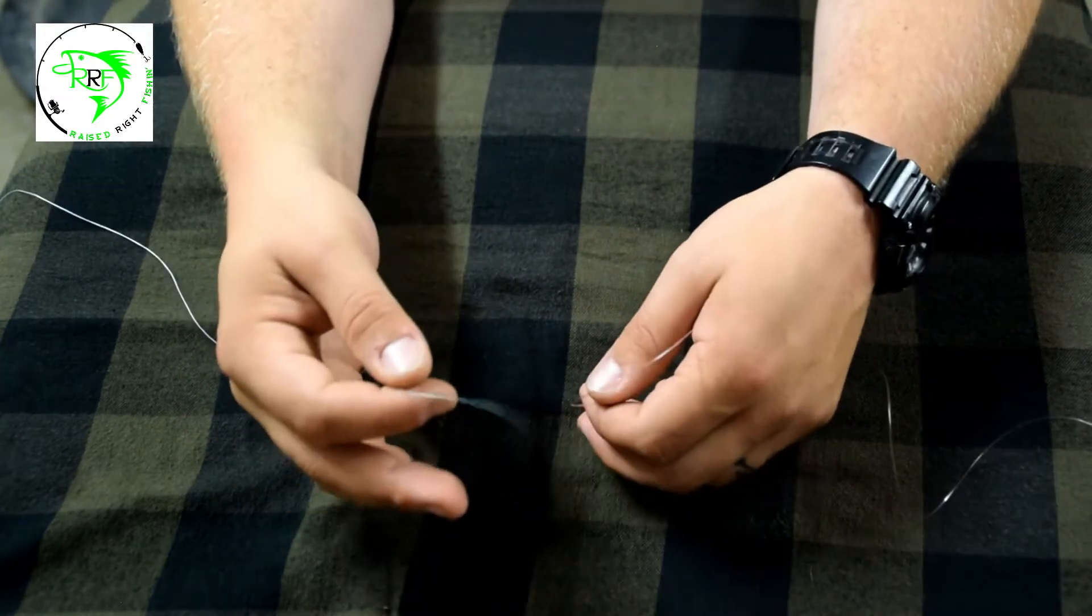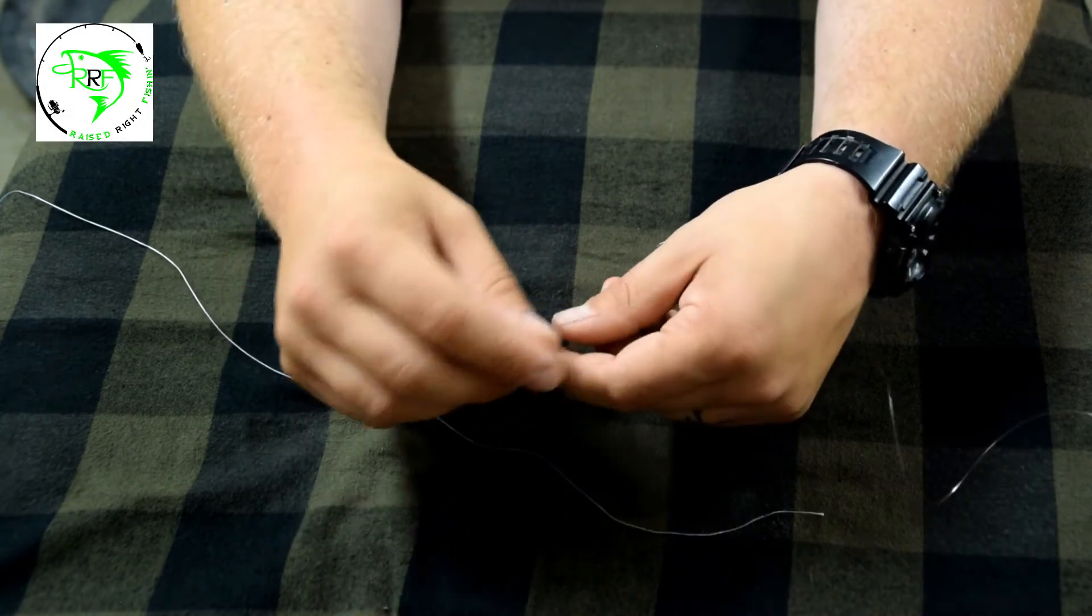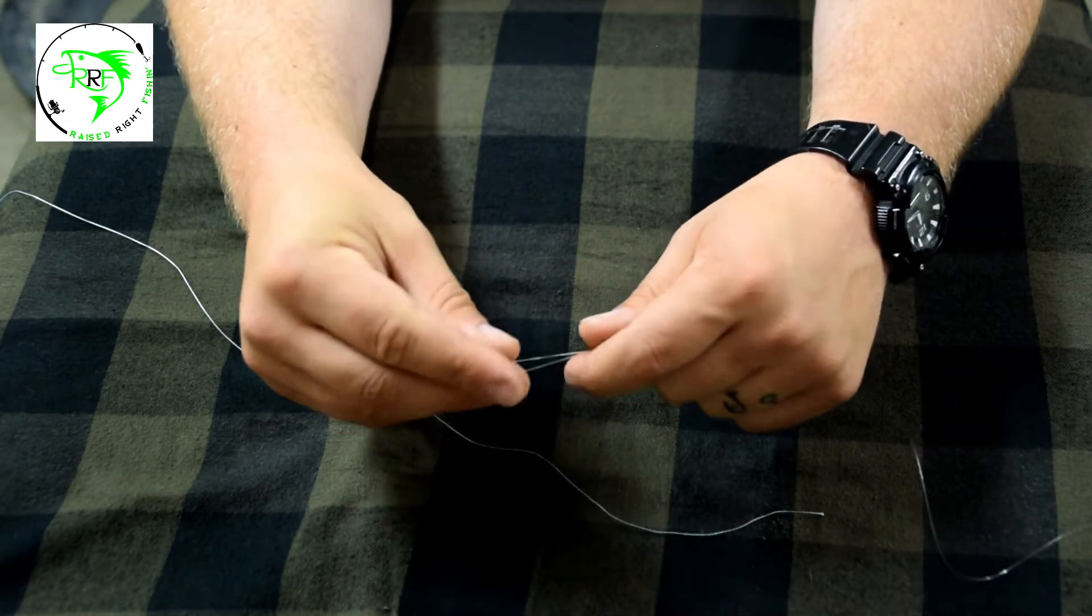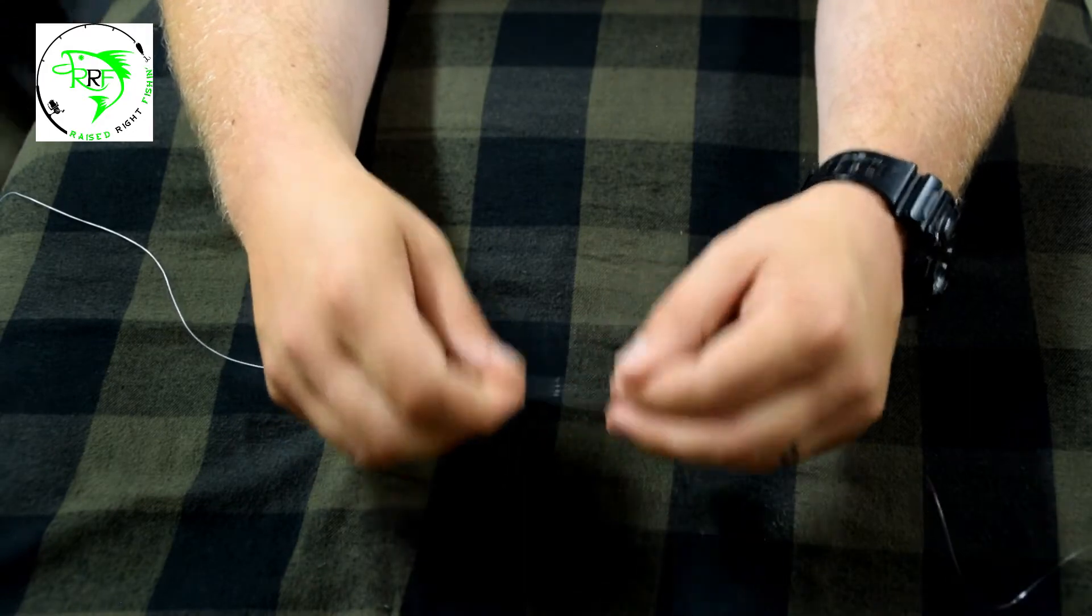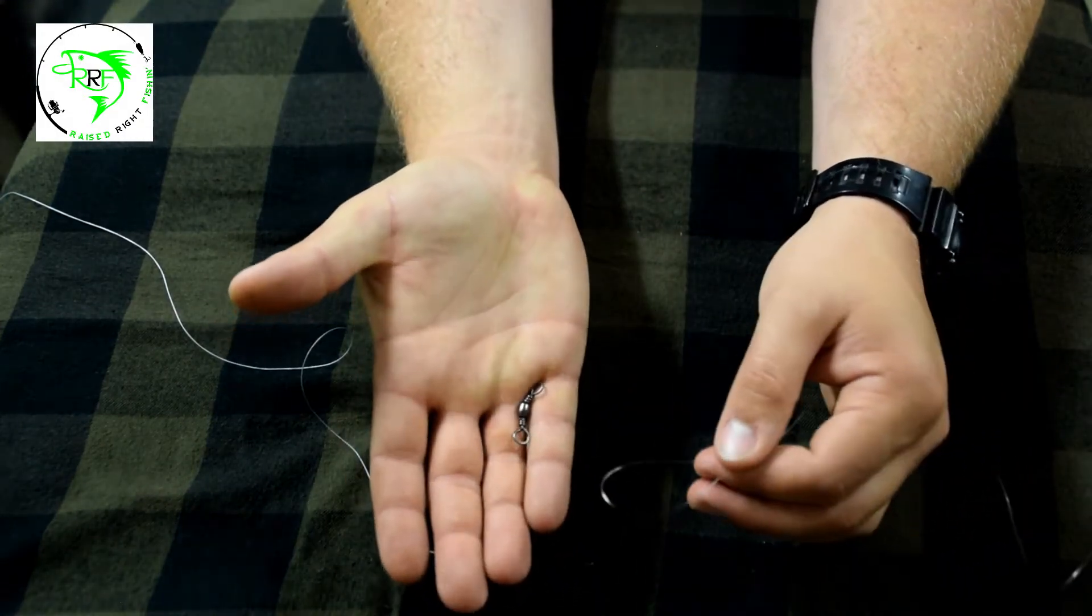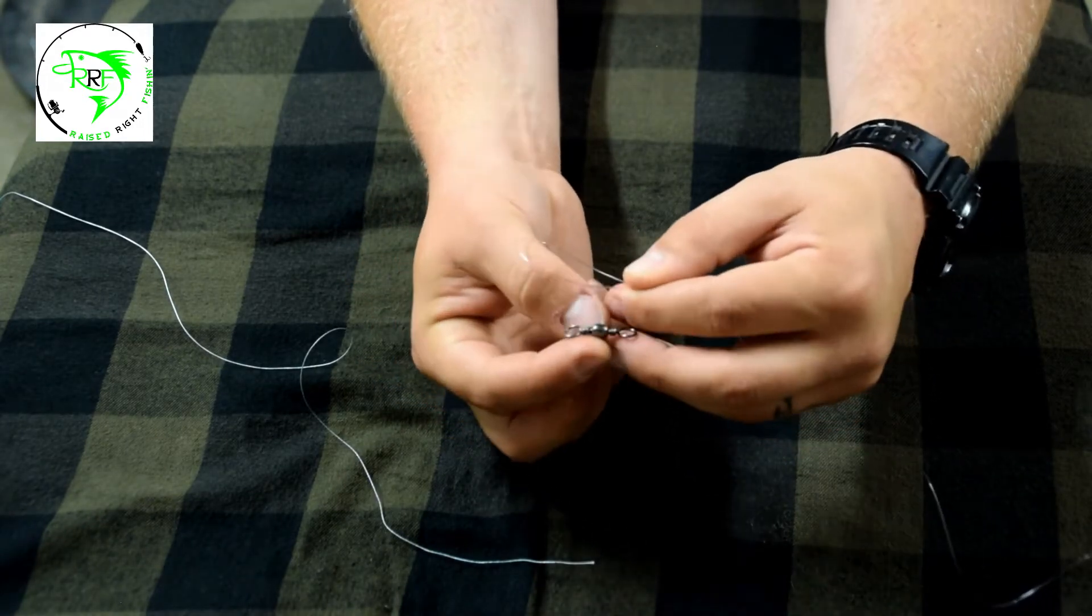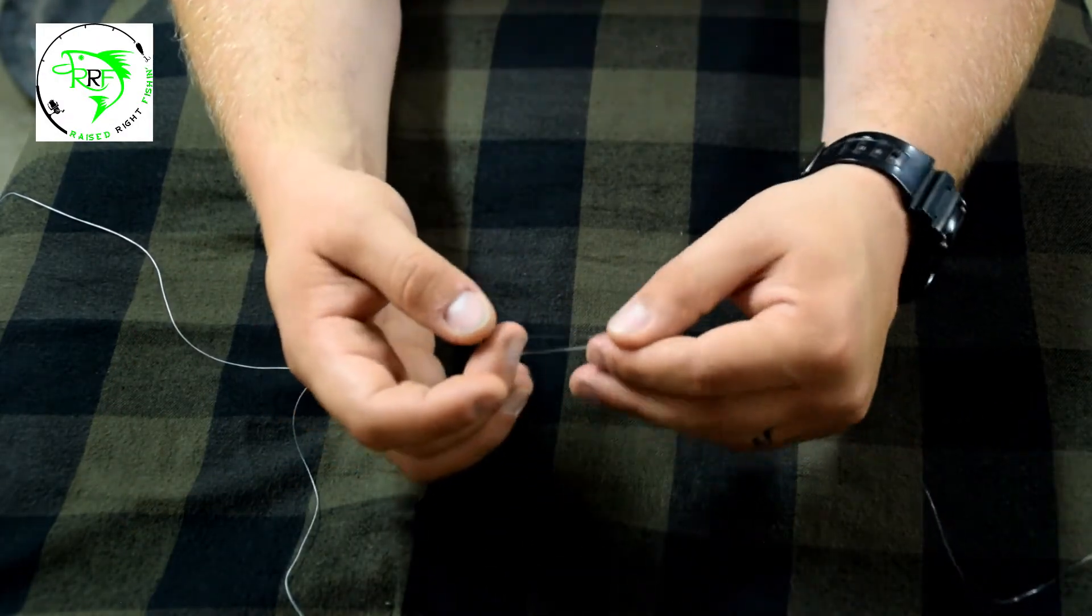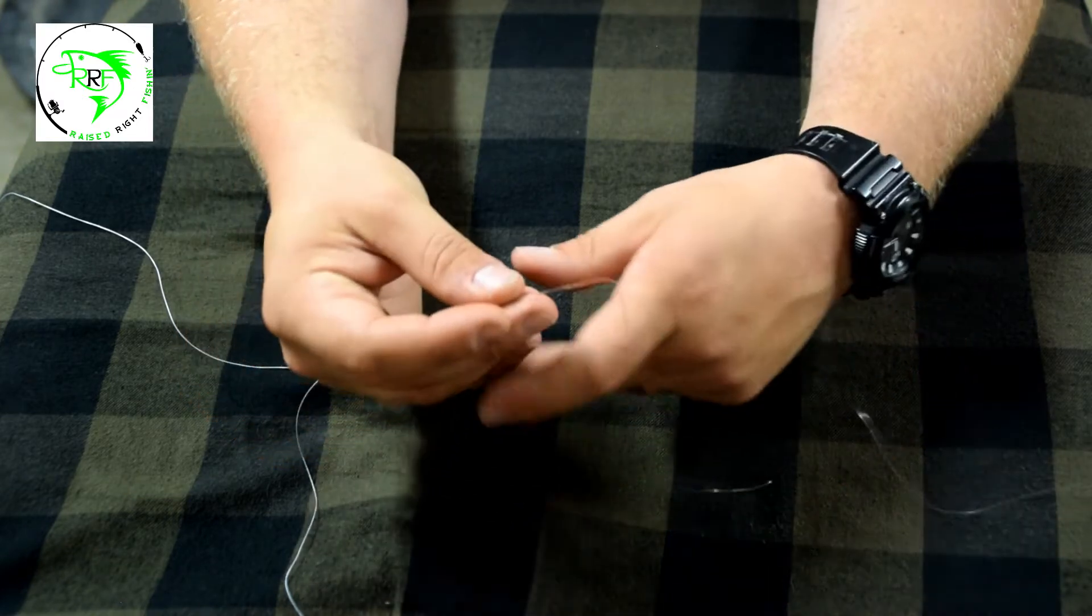Today we're going to tie our braided mainline going from our reel to a fluorocarbon or a mono leader. There's two different ways you can do that with a thousand different knots. I'm going to show you two different ways with two different knots. One is line to line, so this braid will directly tie on to the fluorocarbon or the mono. The other one is to use a swivel, so your leader would be attaching to this side of the swivel and then your braid would be attaching to the other side. There's advantages of both and disadvantages of both.